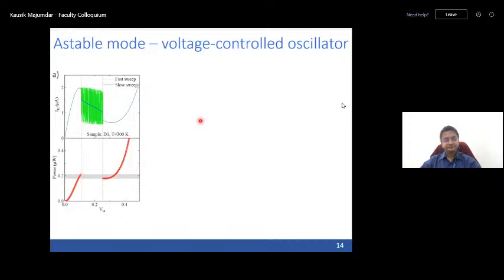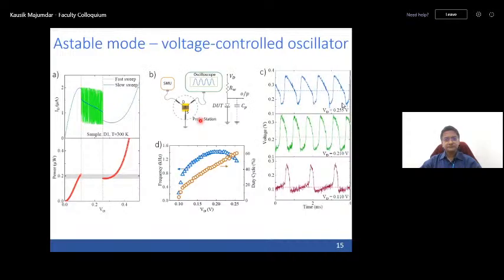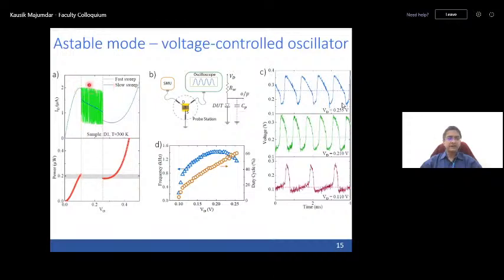The next question: what frequency was achieved with the tunnel diode? We achieved about 1.4 kHz. This is primarily limited by the parasitic capacitance of the DC probe station used for measurement. To improve the frequency, we need to reduce the RC delay — reduce C by improving the measurement setup and reduce R by increasing the peak current. This is something we are currently working on.